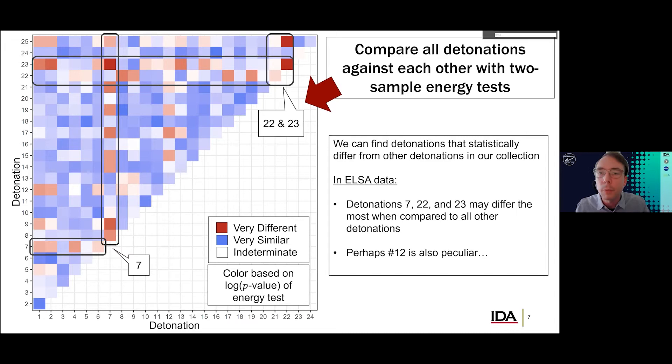And when we look at this matrix patterns begin to emerge. So, we can take rows and columns that are associated with a specific detonation and find outliers. And an outlier in this case is a pipe bomb detonation that is maximally dissimilar from other detonations. And we've, in this case, we find that detonations 7, 22, and 23 are the most peculiar based on this energy test, and therefore they deserve further interrogation.